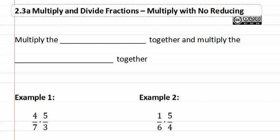2.3a, multiply with no reducing. Multiply the numerators together and then multiply the denominators together.